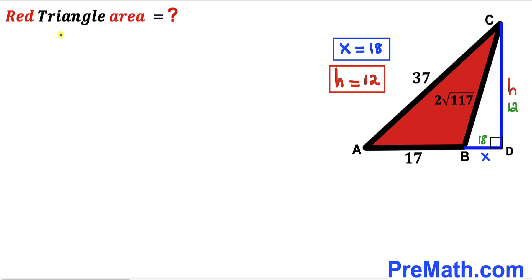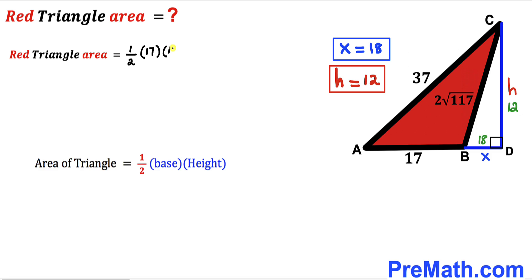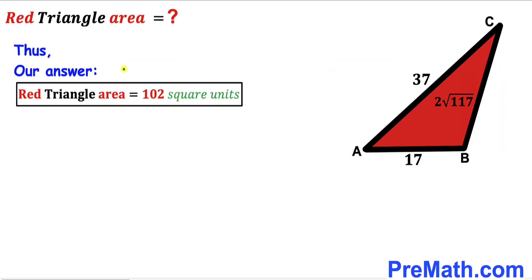Here's our final step. We are going to calculate the area of this red triangle ABC. Recalling the area formula: area = ½ × base × height. In our case the base is 17 and the height is 12, so area = ½ × 17 × 12 = 102 square units. After all the calculations, the area of the red triangle ABC turns out to be 102 square units — that's our final answer. Thanks for watching and please don't forget to subscribe to my channel for more exciting videos.